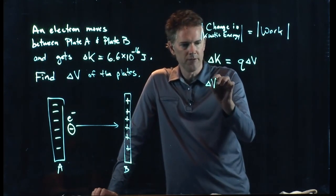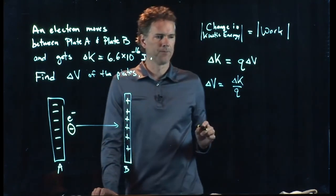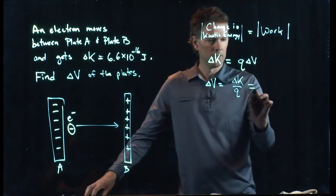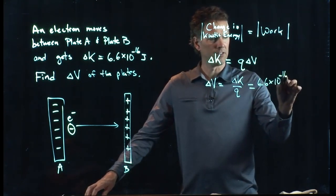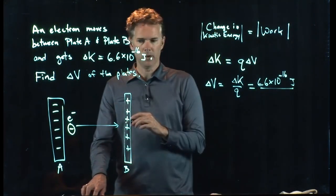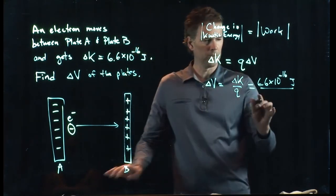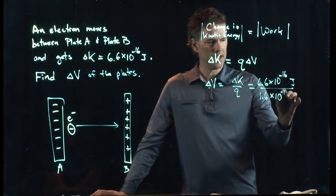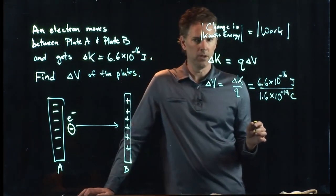So, delta V equals change in kinetic energy divided by Q. We know this number. Delta K is 6.6 times 10 to the minus 16 joules. We know what Q is because it's one electron. And again, we're not worrying about signs here. So, we'll just put in the magnitude. 1.6 times 10 to the minus 19 coulombs. Those are SI units.